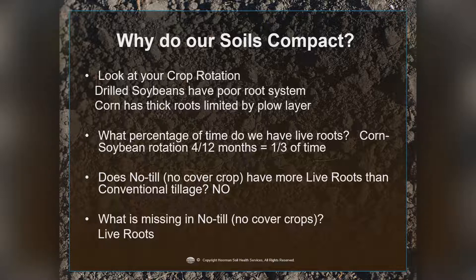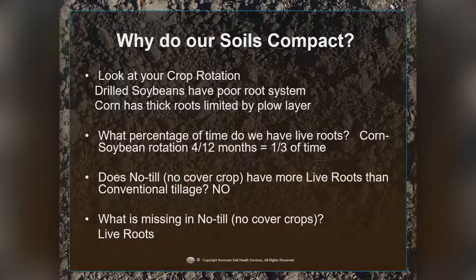What percentage of the time do we have live roots? In a corn-soybean rotation, you may only have four to five months, or about a third of the year, with live roots in the soil. Adding wheat or a cover crop, our goal is to have live roots 11 to 12 months out of the year. No-till without a cover crop doesn't really have more live roots than a conventional tilled system — it's not until you add cover crops that we get more roots, more soil organic matter, more pore space, and start to break up soil compaction and form more macroaggregates.